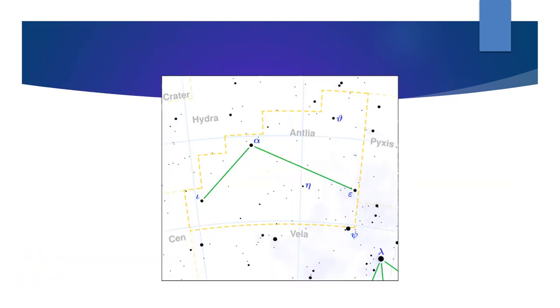While its stars are not especially bright, five of them are known to have orbiting exoplanets.